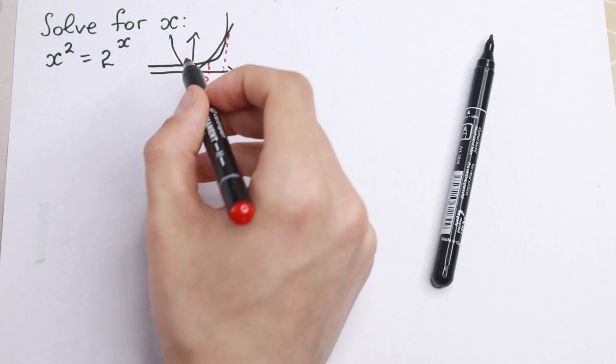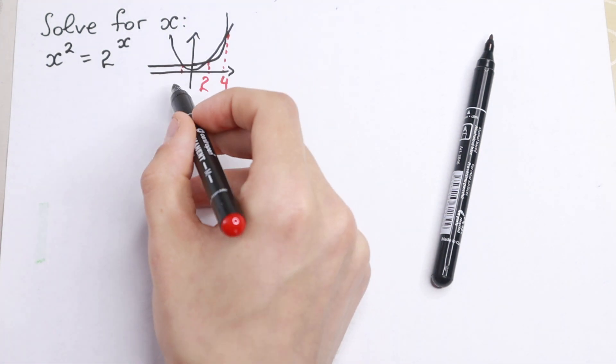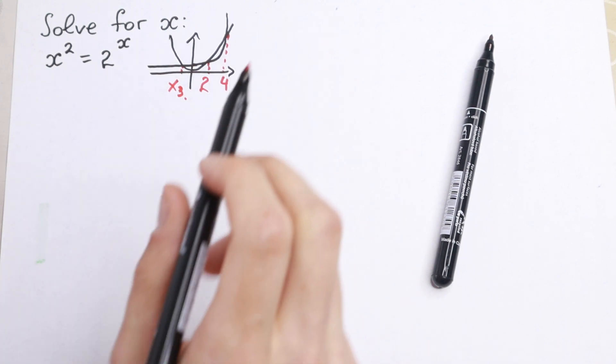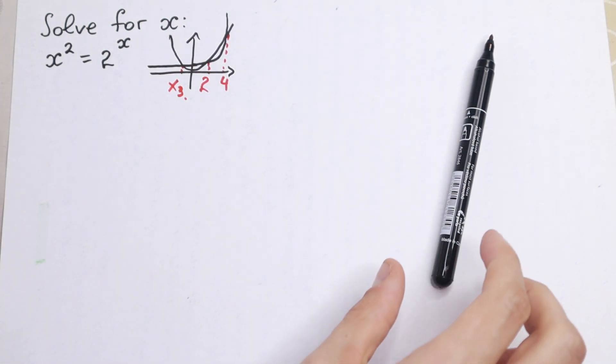But what about this point? Because right here we'll have one more point on the graph, and this will be our x3. Right now we are going to find this third root.